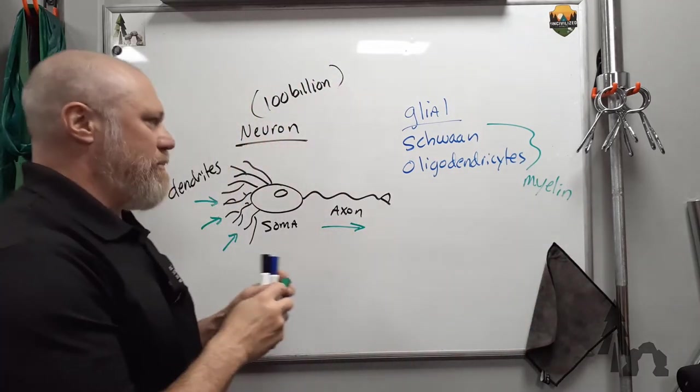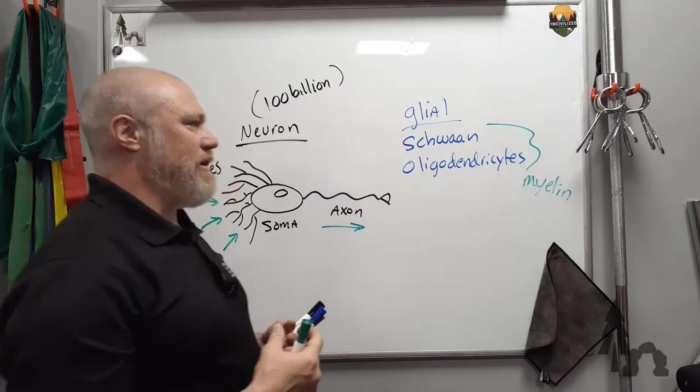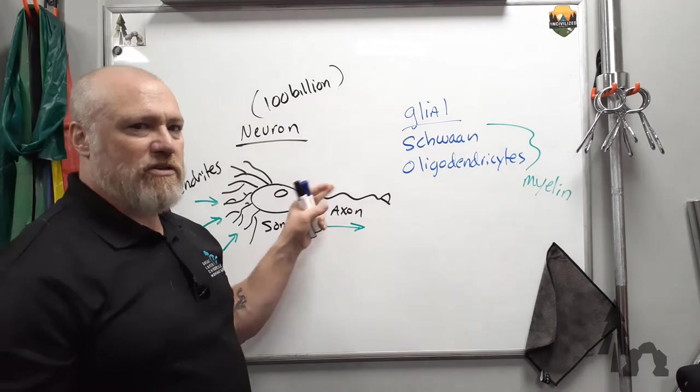Myelin, it's a fatty protein substance that's not going to absorb certain stains, which we'll get to in a second. But it provides insulation and protection to parts of the neuron.